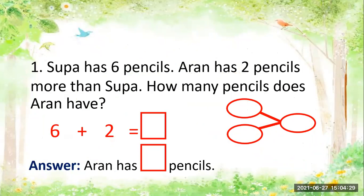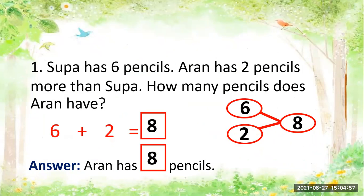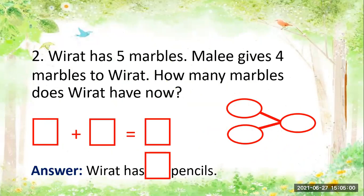Next, number one: Super has six pencils. Aaron has two pencils more than Super. So how many pencils does Aaron have? Six plus two — that's the number sentence. Six plus two is eight. So the answer is Aaron has eight pencils.